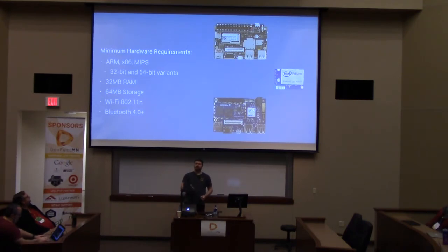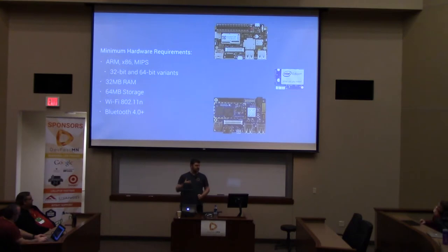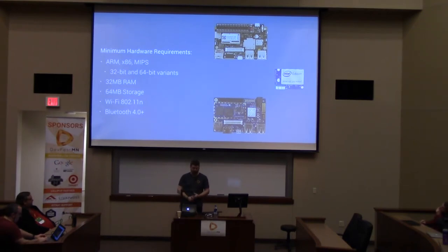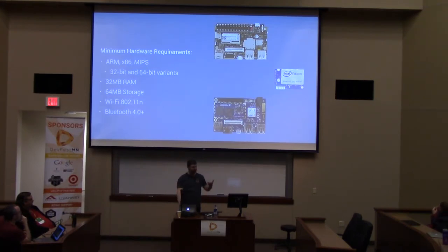The hardware requirements that Brillo is targeting — these are not the specs they're currently hitting but where they expect to be at release. Technically Brillo is still in private beta. The targets are 32 MB RAM, 64 MB storage — pretty impressive given where Android requirements are. It supports all architectures, 32 and 64-bit, because Android supports all those things. The idea is: if your SoC supports Android, it should support Brillo with essentially no work, since all the lower layers aren't changed. Wi-Fi and Bluetooth are also required.